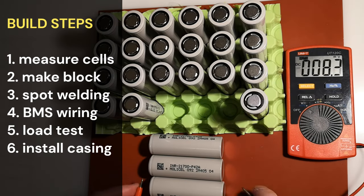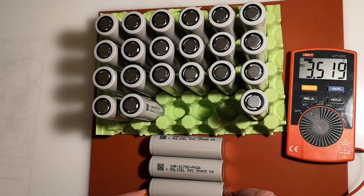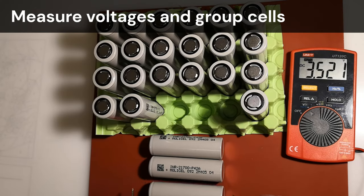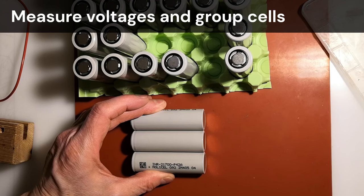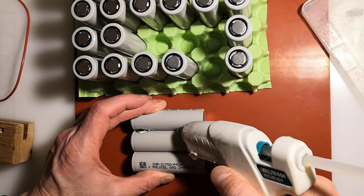Initially, I'll test the cells, selecting those with the same voltage, and group them in sets of three. I ordered three extra cells to have backups in case one cell is faulty. Indeed, I found one weaker cell and set it aside.